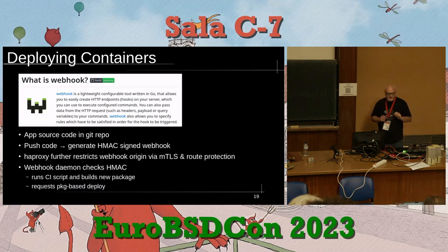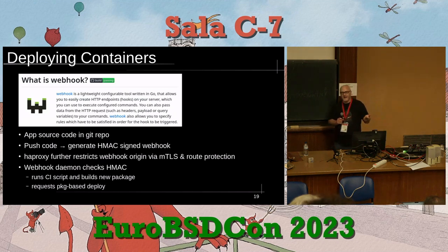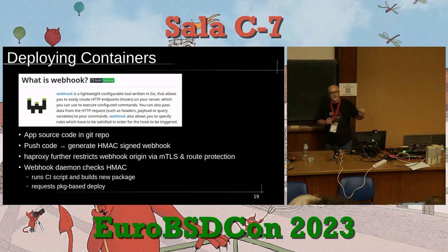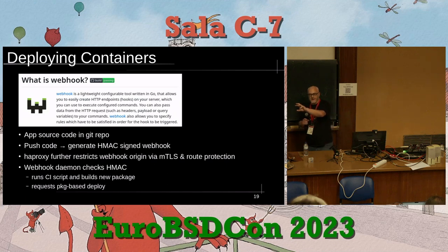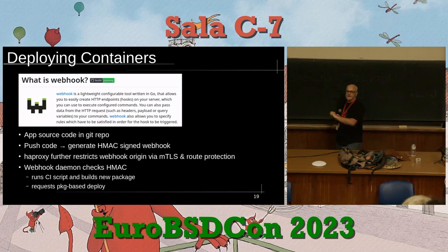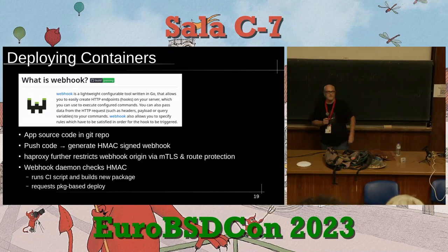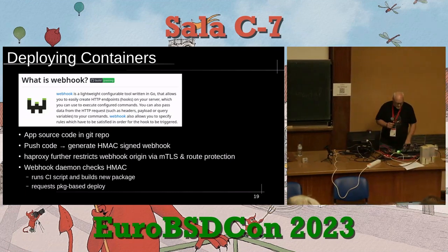This deploy process relies on a robust health check in the application. When the application starts up it should be able to report that the database is working, logging is functioning, and it has enough CPU and memory. If the health check reports okay, Ansible re-adds the jail back into the load balancing pool and waits for it to settle. Then it removes the next jail from the pool, waits for it to drain, adds the updated one back in, and repeats — a rolling deploy.